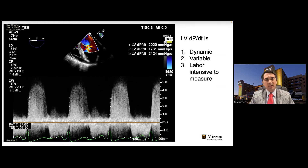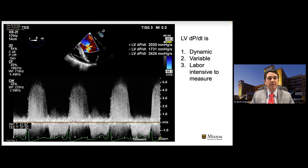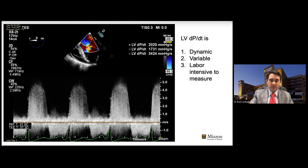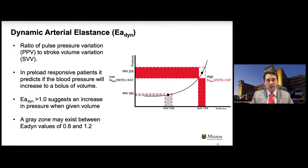This wouldn't be a cardiac surgery talk without at least one echo picture. This shows measuring the isovolumic contraction, or dP/dt during isovolumic contraction on echo using the mitral regurgitation jet. This is very dynamic in the OR — within three consecutive beats you can get significantly different numbers. It's also very labor-intensive with a lot of variability, as even small changes in measurement position can significantly affect the numbers. This was used to correlate and validate the Acumen dP/dt parameter — it correlates with LV dP/dt, though you get a different absolute number.